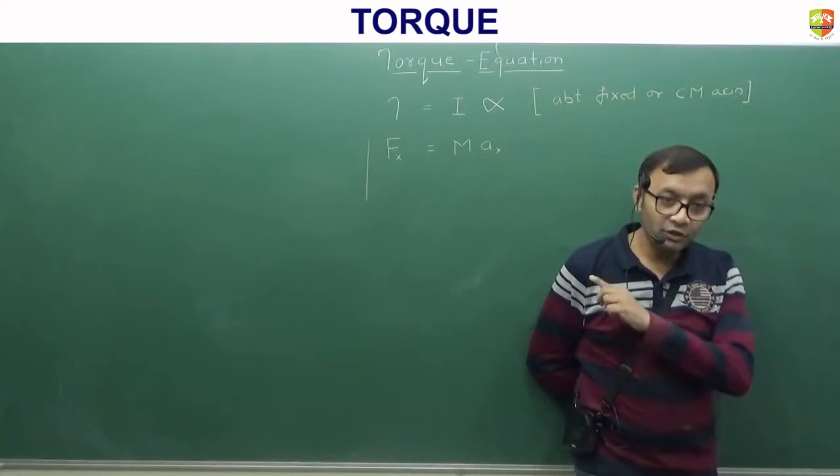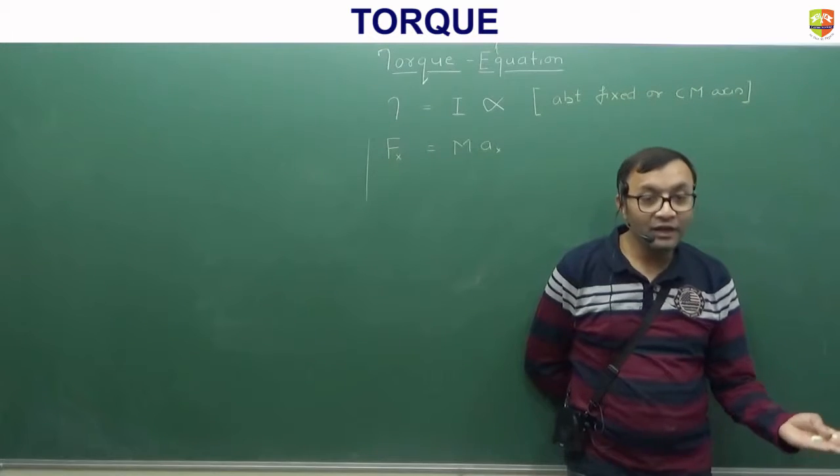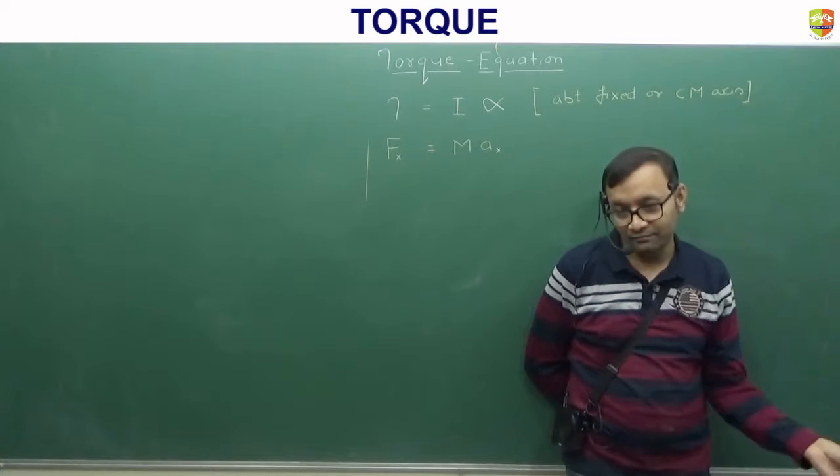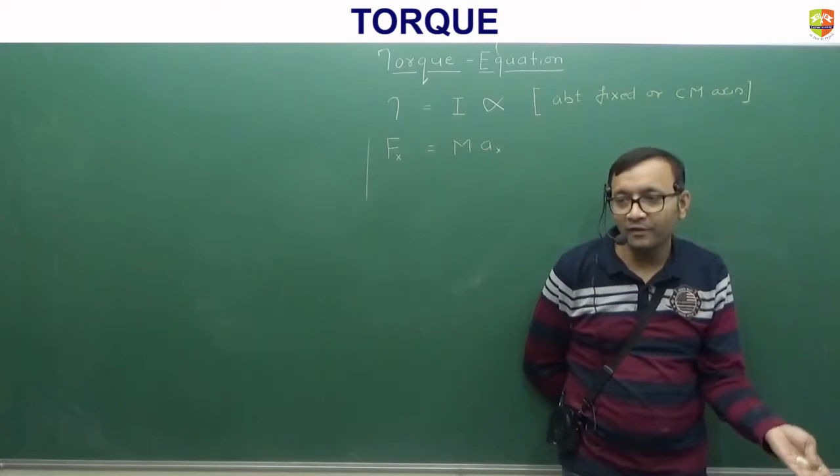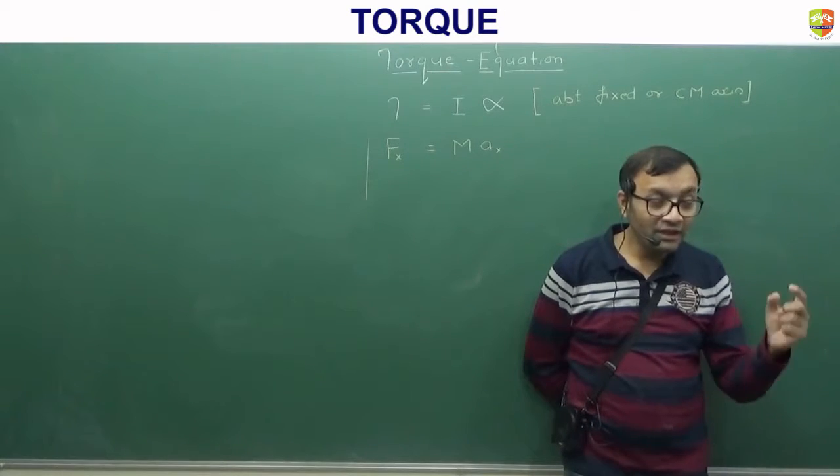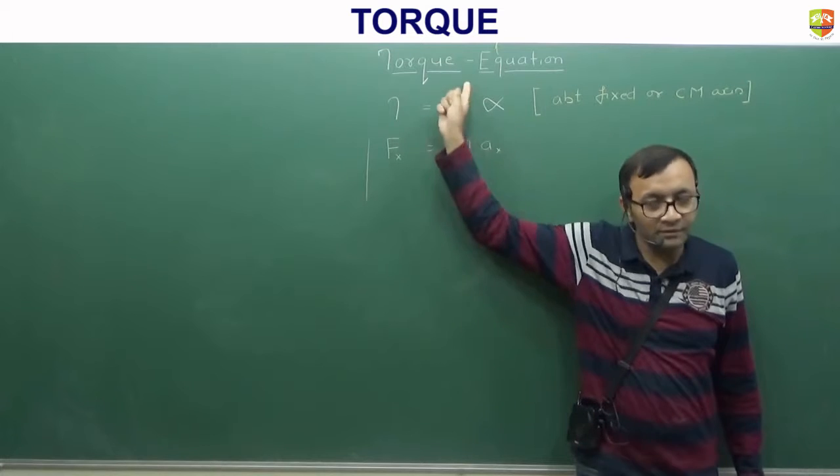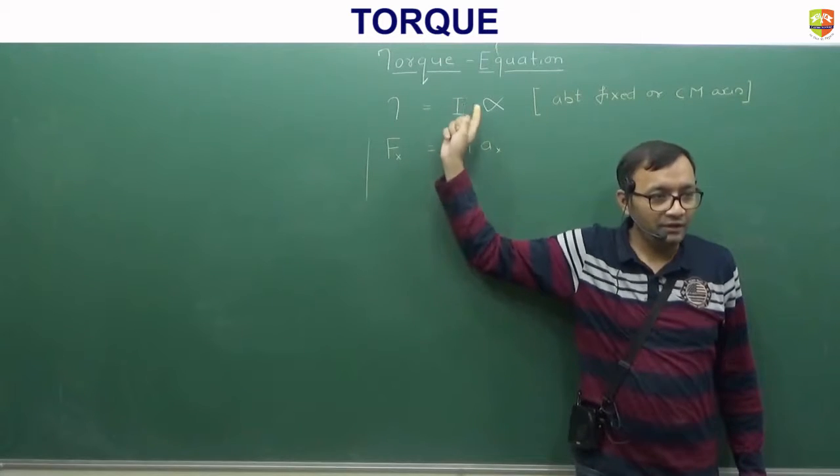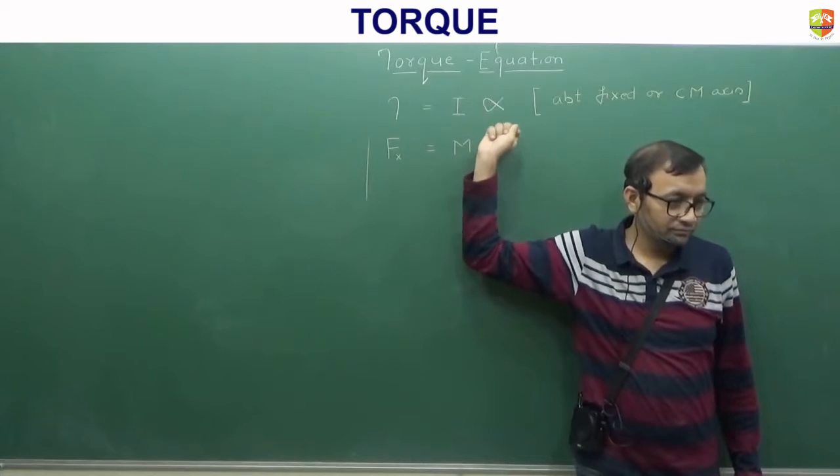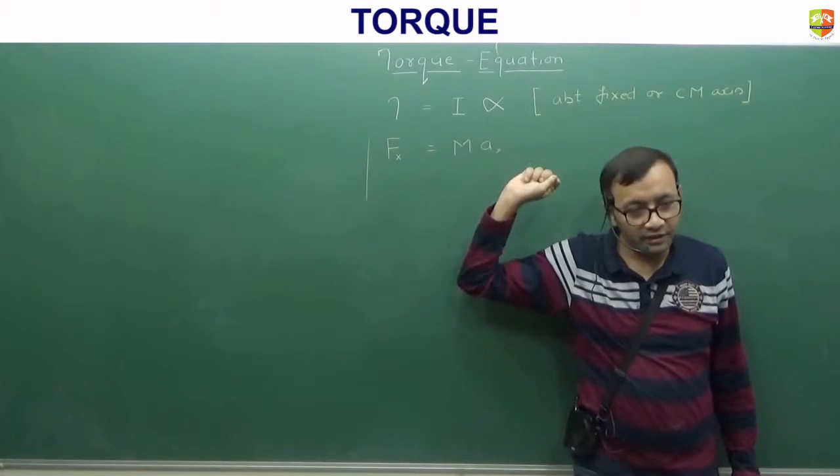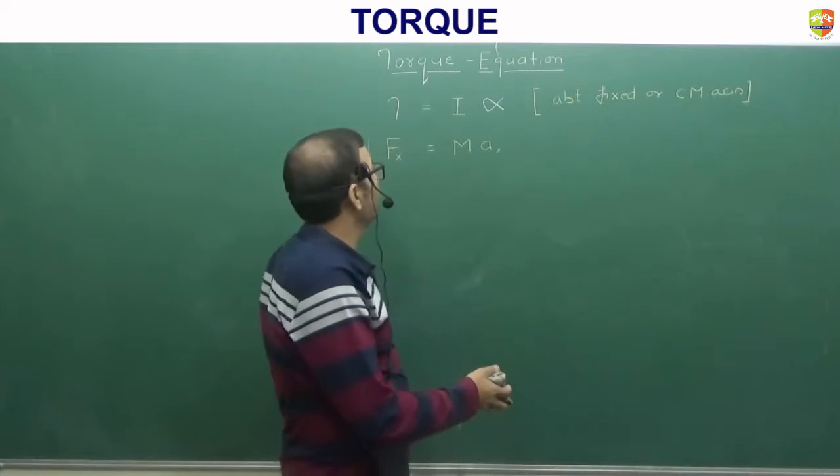Apart from that, there is a torque equation also which will give you alpha. And if suppose you have a relation between alpha and A. If you know that it is rolling without slipping. Alpha is equal to A by R. Or A is equal to alpha R. Then you can connect this equation with that equation. Because alpha is equal to A by R. So there is a connection between these two equations. Are you getting it? But if suppose there is no relation between alpha and A. There is no connection. Are you getting it? Is it clear? So let's take couple of simple questions. Then you will understand how to apply this.